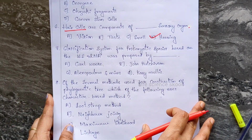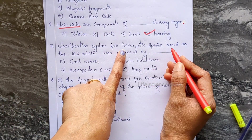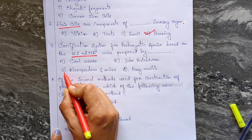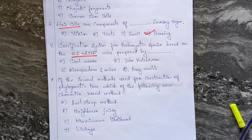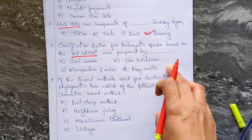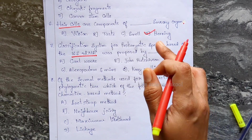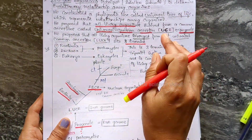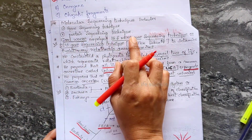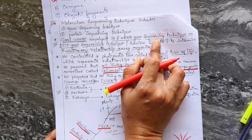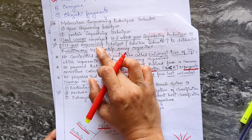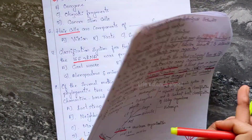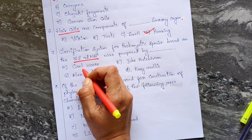Moving on to the next question: the classification system for prokaryotic species based on 16S rRNA was proposed by Carl Woese. He employed the 16S rRNA gene sequencing technique — that is the SSU (small subunit) gene sequencing technique — to determine the evolutionary relationship among organisms. So Carl Woese is the correct answer.